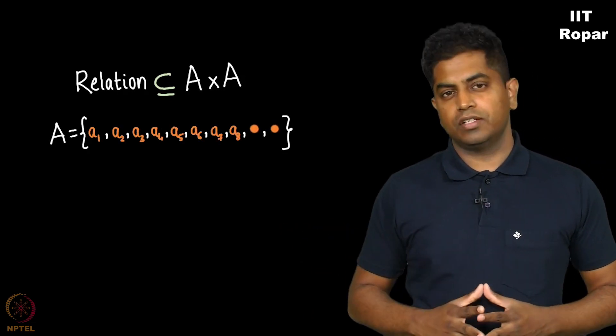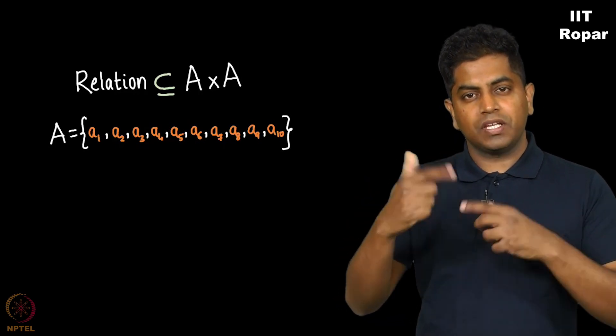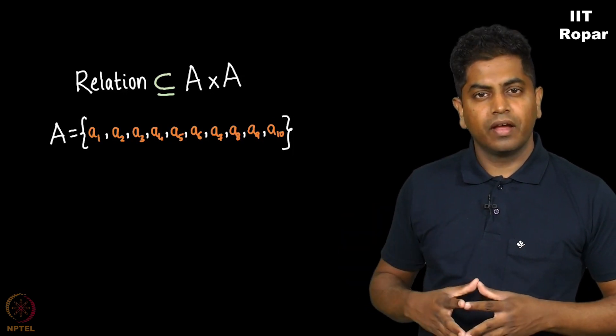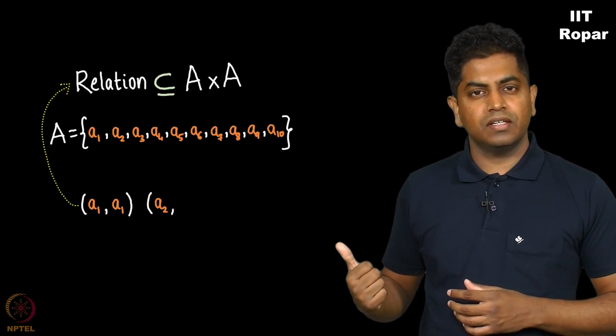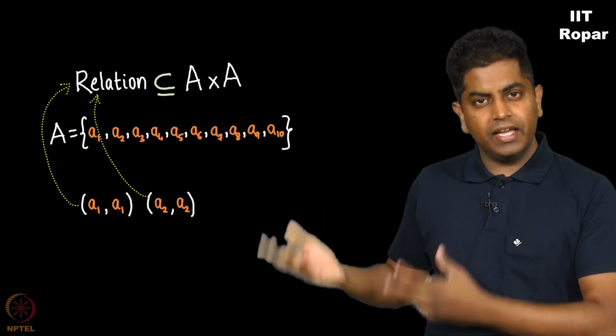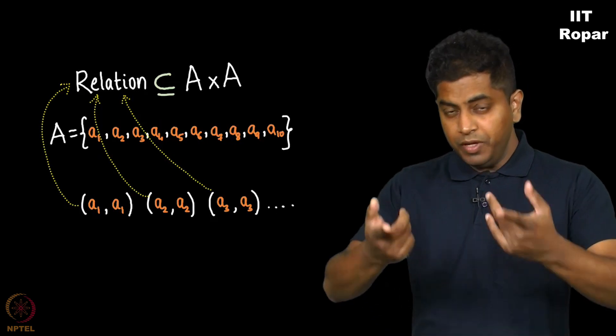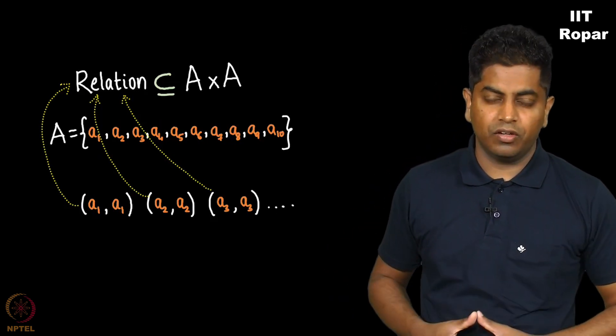Definitely for sure you observe that self loops are here which means X, X is here. The first person, the same person is here. Second person, second person is here. Right? A1, A1, A2, A2, A3, A3 and so on up to A10, A10 is definitely here and beyond this there are more elements of A cross A.